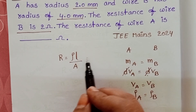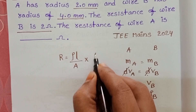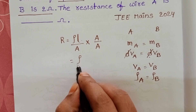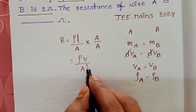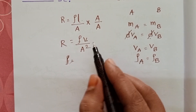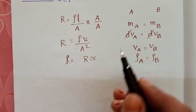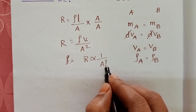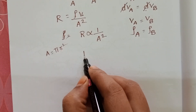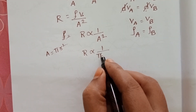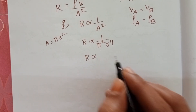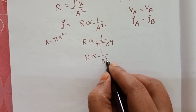We don't know the length of the two wires, so multiply and divide with area. Area into length becomes volume. This gives resistance proportional to resistivity into volume divided by area squared. Since resistivity and volume are constants, resistance is directly proportional to 1 by A squared. Since area equals pi r squared, resistance is proportional to 1 by pi squared r to the power 4. Since pi squared is also constant, resistance is directly proportional to 1 by r to the power 4.